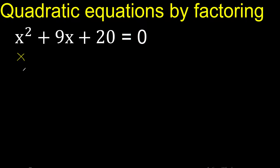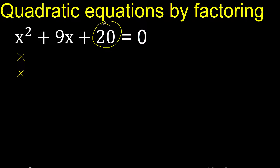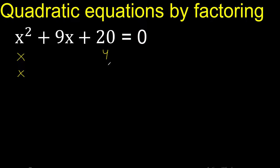x multiplied by x is x squared. We need 2 numbers that multiply to 20: 10 multiplied by 2 is 20, or 4 multiplied by 5 is 20.